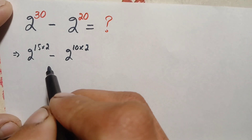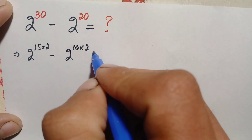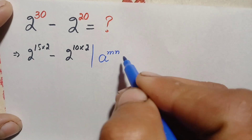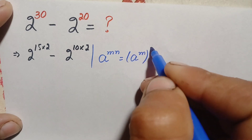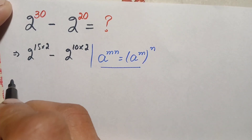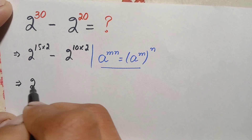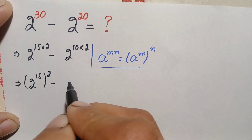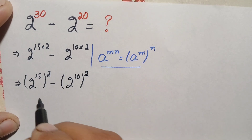In these two terms we will use an exponential identity. We can write a raised to power m times n as a raised to power m, raised to power n. Using this identity, this expression becomes 2 raised to power 15, whole square, minus 2 raised to power 10, whole square.